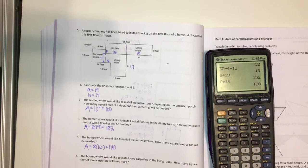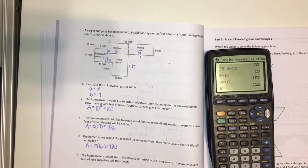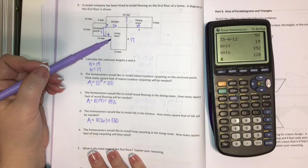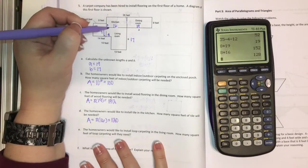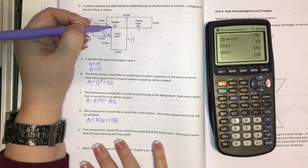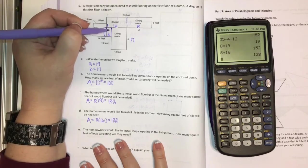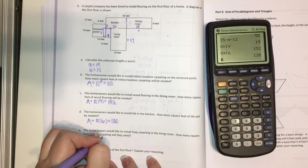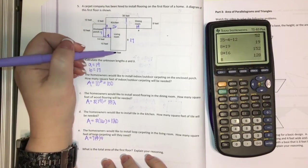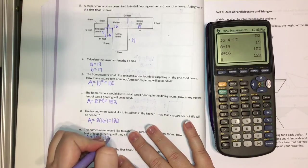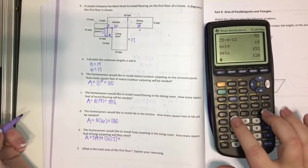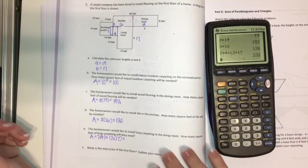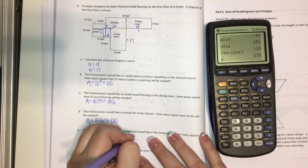They're going to install loop carpeting in the living room. How many square feet of loop carpeting would they need? So the living room is a little bit different. We've got different parts. So I'm going to cut this little rectangle off of this right here. And this is just going to be 7 times 4. So the area of the small part is 7 times 4 plus we need to find this bigger part of the living room, which would just be 12 times 17. And so we can just put that in our calculator. And they have 232 square feet.